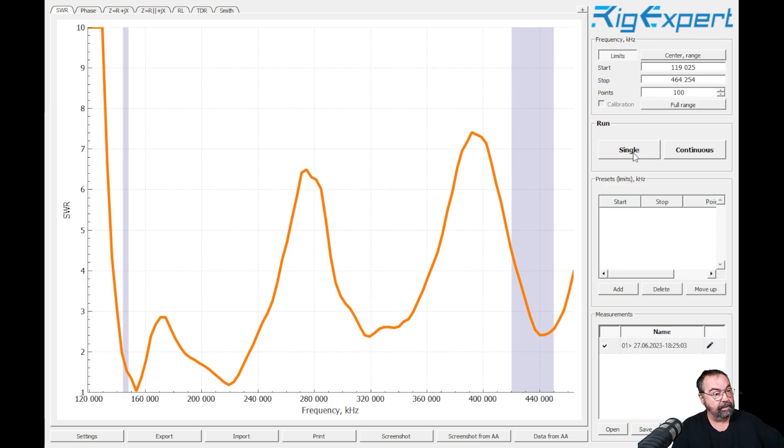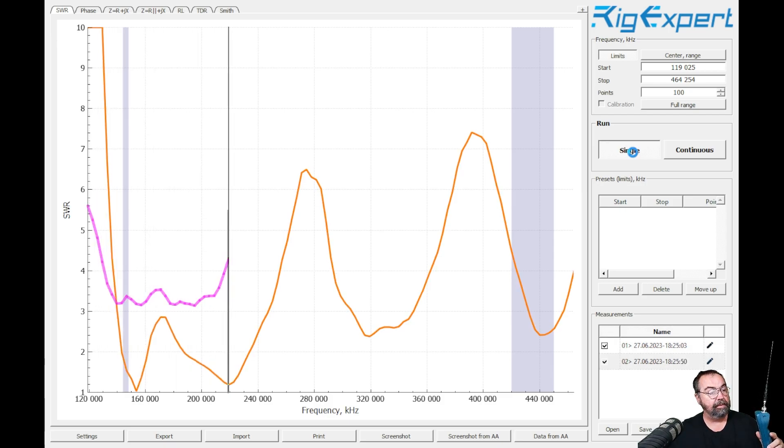Our next antenna is the Diamond. This is the Diamond RH-77CA. This is the one we didn't test last week because I didn't have a BNC adapter for it. And let's run this guy. This is antenna B, the Diamond antenna.